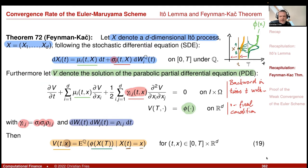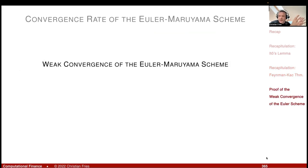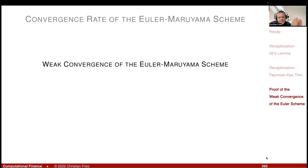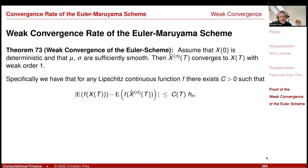So we now have two ingredients: Itô's lemma, which describes how a function of a stochastic process evolves forward in time, and Feynman-Kac, which describes how the conditional expectation process evolves backward in time. Using these two, we can prove weak convergence of the Euler scheme.